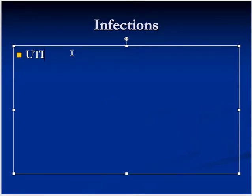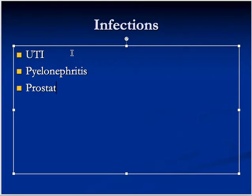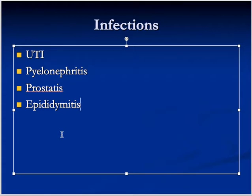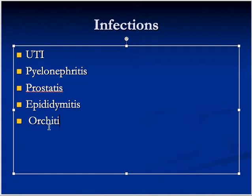There could be UTIs — we collectively call them UTIs. There could be pyelonephritis, prostatitis, epididymitis, orchitis — so simply all these are urological infections. In females, of course, the gynecologist deals with most of the infections like salpingitis and similar conditions.